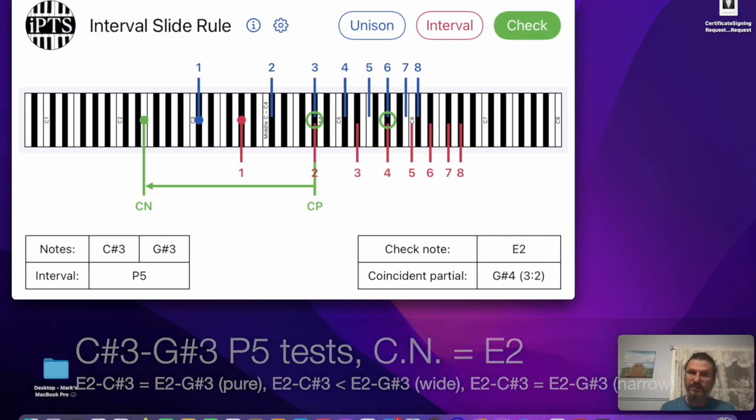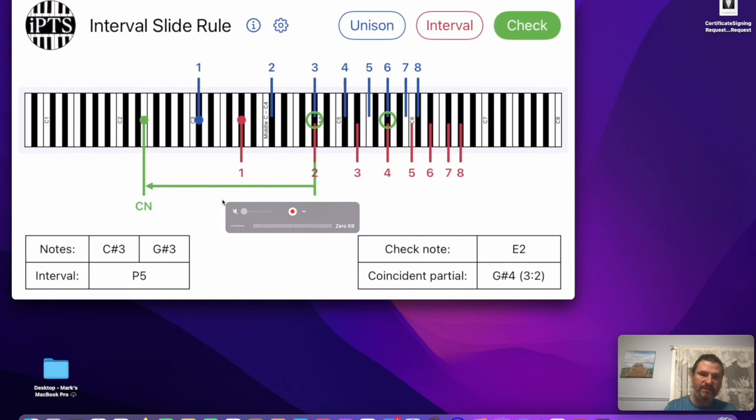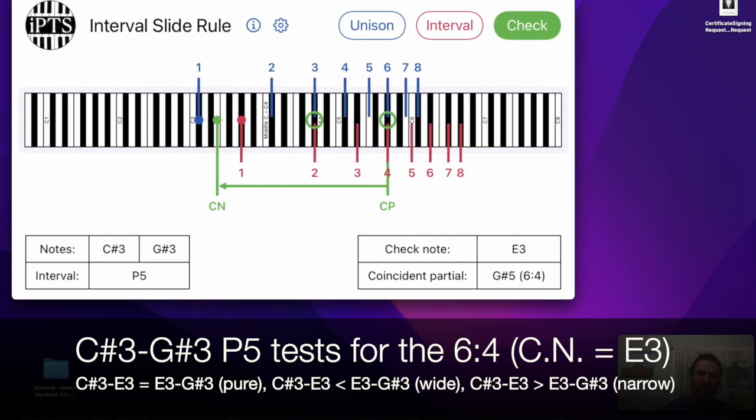And there's a way of doing that by listening to the interval speeds. If they're the same speed, you've got a pure interval. And you can also slide that around. If you wanted to look at, let's say, the second coincident partial, you grab, just grab the check note. And if you get even close to it and let go, it will slot into that second coincident partial. And that shows you what the coincident partial is there.